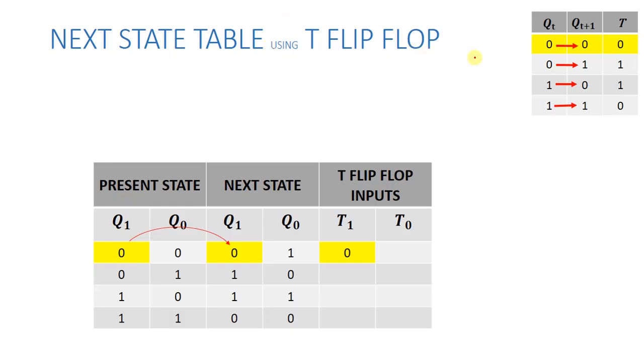First of all, we need to see T flip-flop excitation table. When we do 0 to 0 transition, you will give 0. Similarly, 0 to 1 transition, you will give 1. When we want to do 0 to 1 transition, then you will give 1.